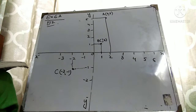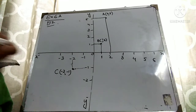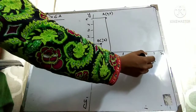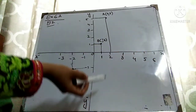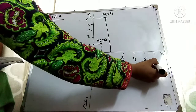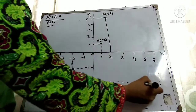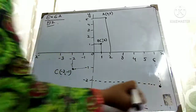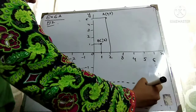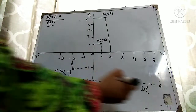Let's come to point D at (6, -2). Value of X is 6. Drag it down because the value of Y is negative. Y value is minus 2. So this is your point D at (6, -2).